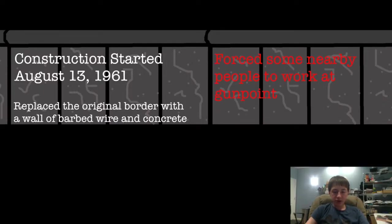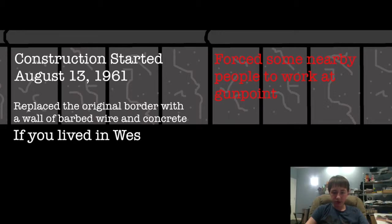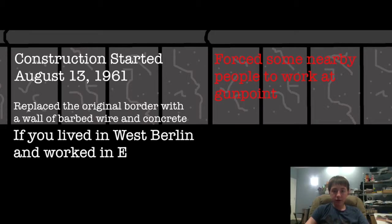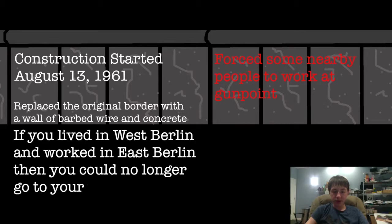Nobody was allowed to cross the border. Before, people were allowed to cross freely, and many people lived on one side and worked on the other. But now the border was closed. If you lived in West Berlin and your job was in East Berlin, then you just lost your job. Some family members lived in West Berlin and others in East Berlin — now they couldn't see each other. It was pretty bad.